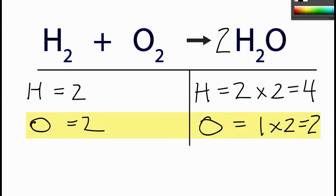So now my oxygens are balanced, but I've changed the hydrogens. Well if I come over here to the reactants and I change the coefficient to 2, 2 times 2, that will give me 4.